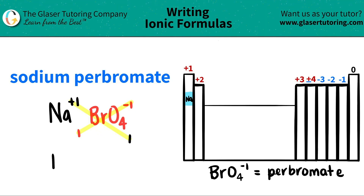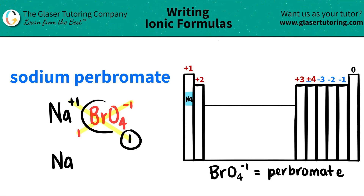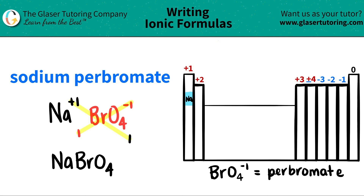I have Na — I only need 1 of them, so I don't have to write the number. And since I have 1 of my polyatomic, I don't need parentheses. So I'll just write the perbromate, BrO₄. And you're done! Sodium perbromate is NaBrO₄.